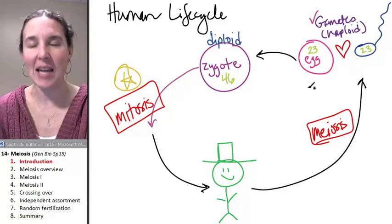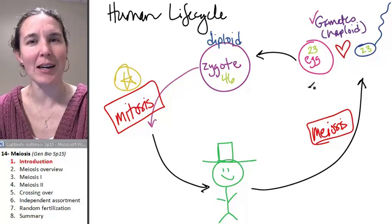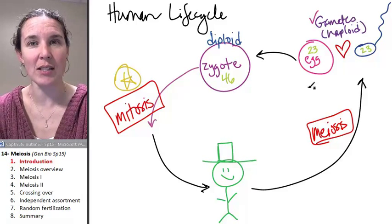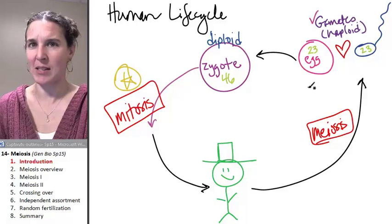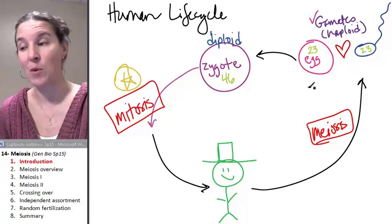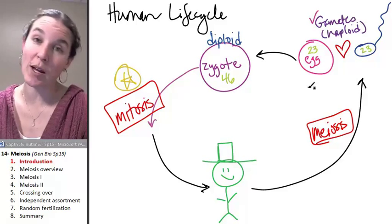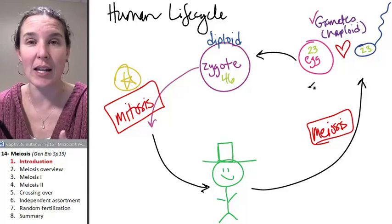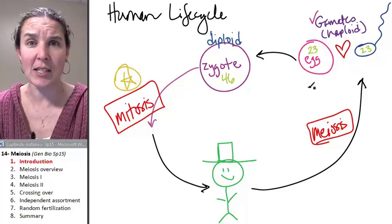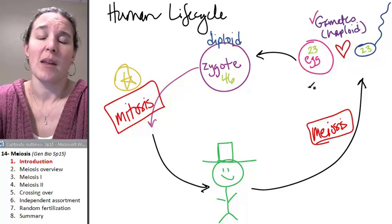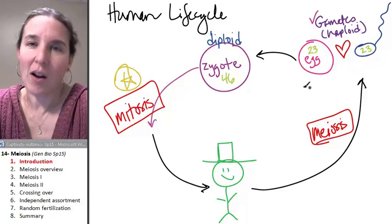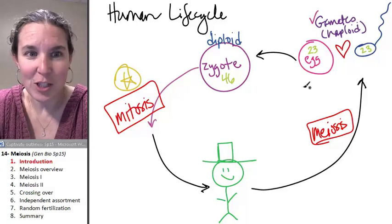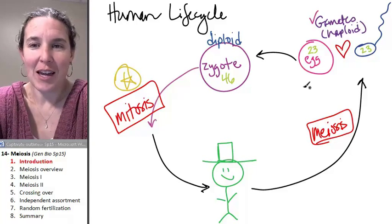If we made gametes, if you made sperm and eggs with mitosis, you would end up with babies that have too much DNA. And then when they had babies, their babies would have way too much DNA. And then when they had babies, their babies would have way, way too much DNA. They'd be super heavy with all this DNA that they don't need. That actually wouldn't happen. They'd all be dead because you can't have too much DNA. You're going to be game over if you do.